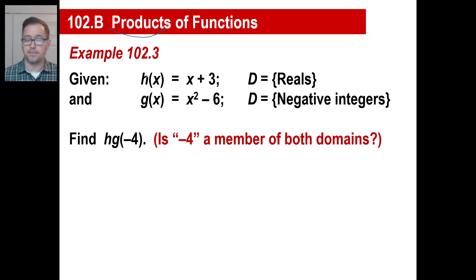They will give you a typical example like this. h of x is that, g of x is that, and find h, g of negative four, which means you're gonna put in negative four every time you see one of these. First off, we need to check, is negative four a member of both domains? Is it a real number? Yes, it is. Is it a negative integer? Yes, it is. We can use it.